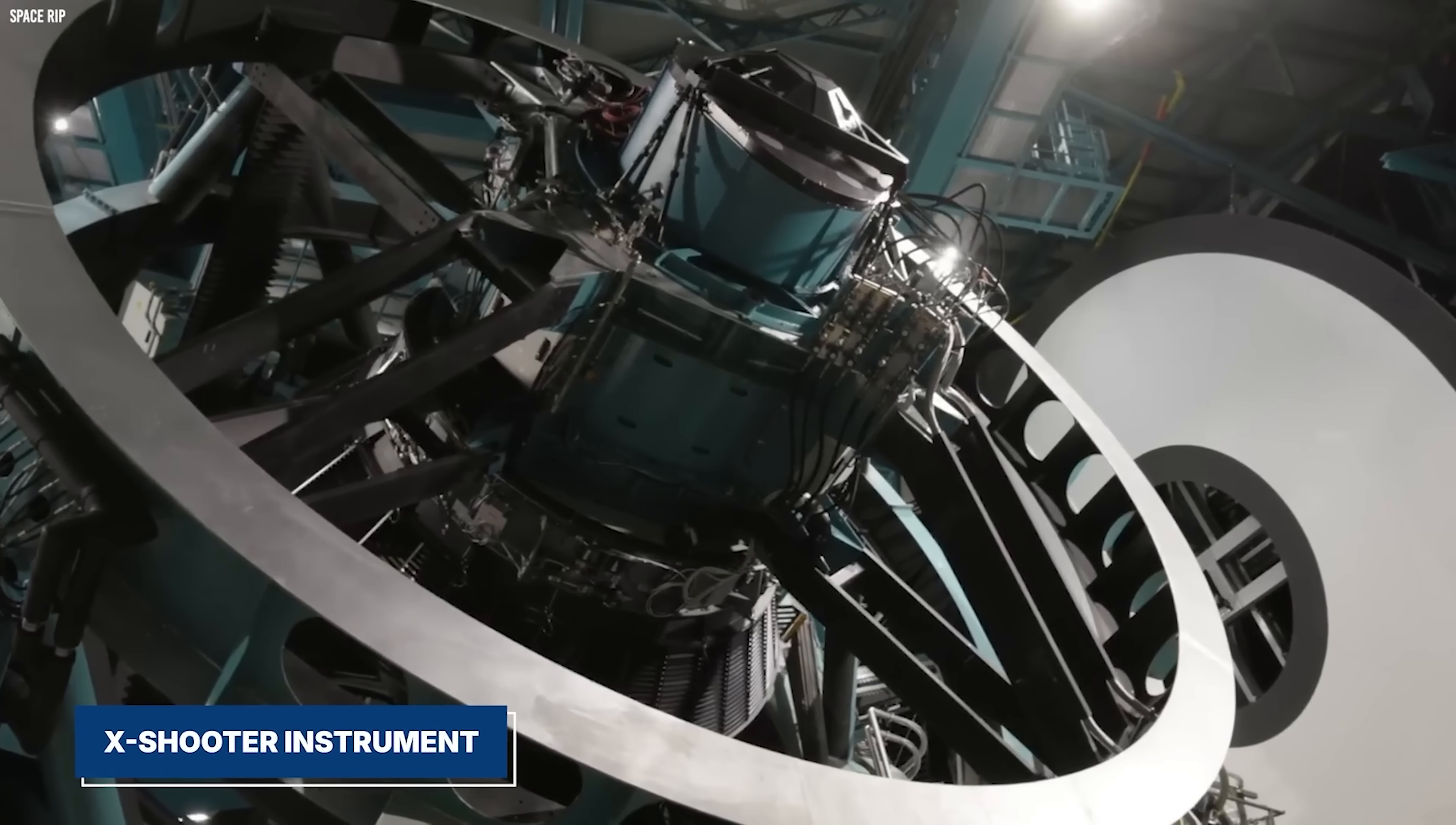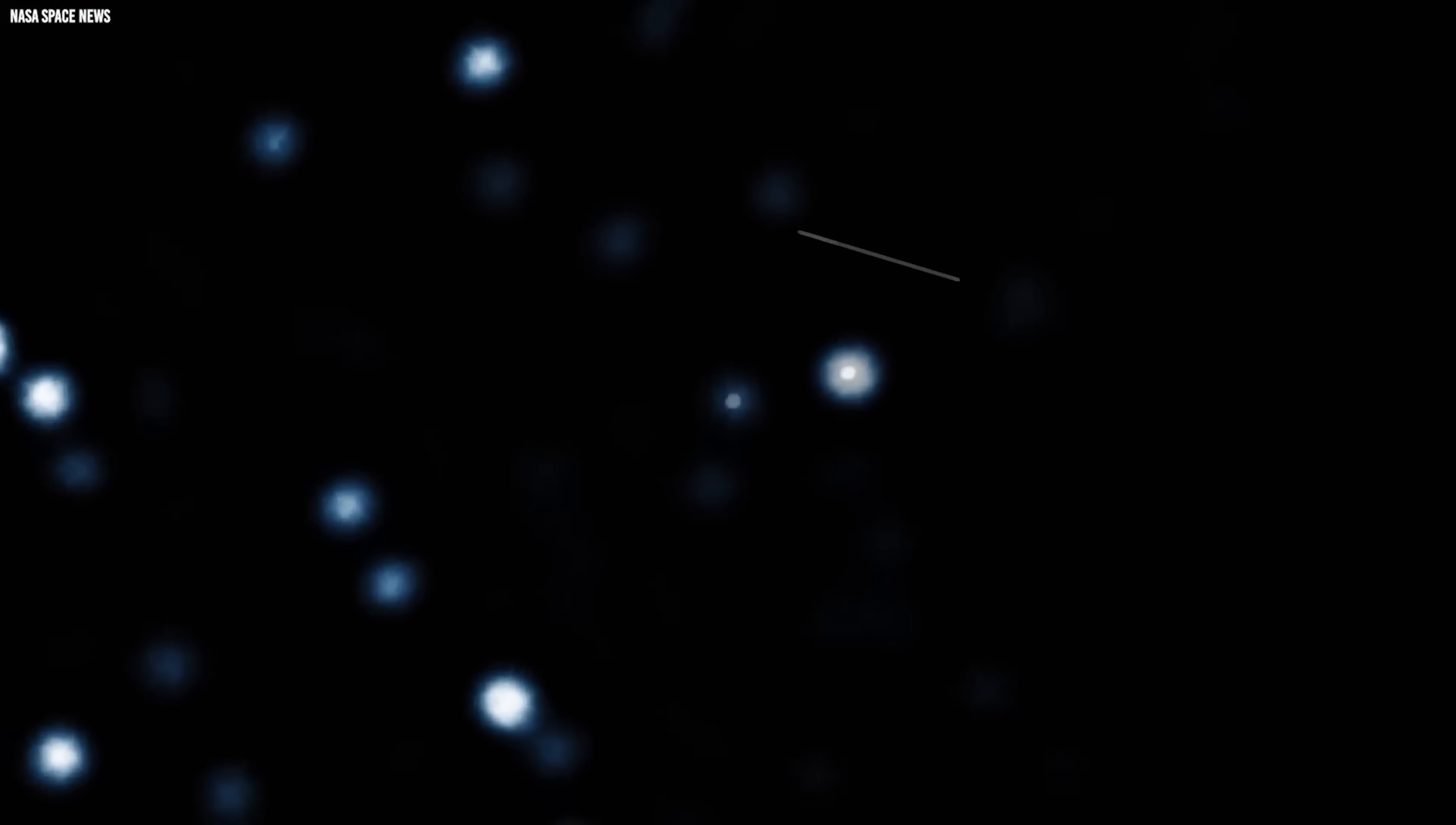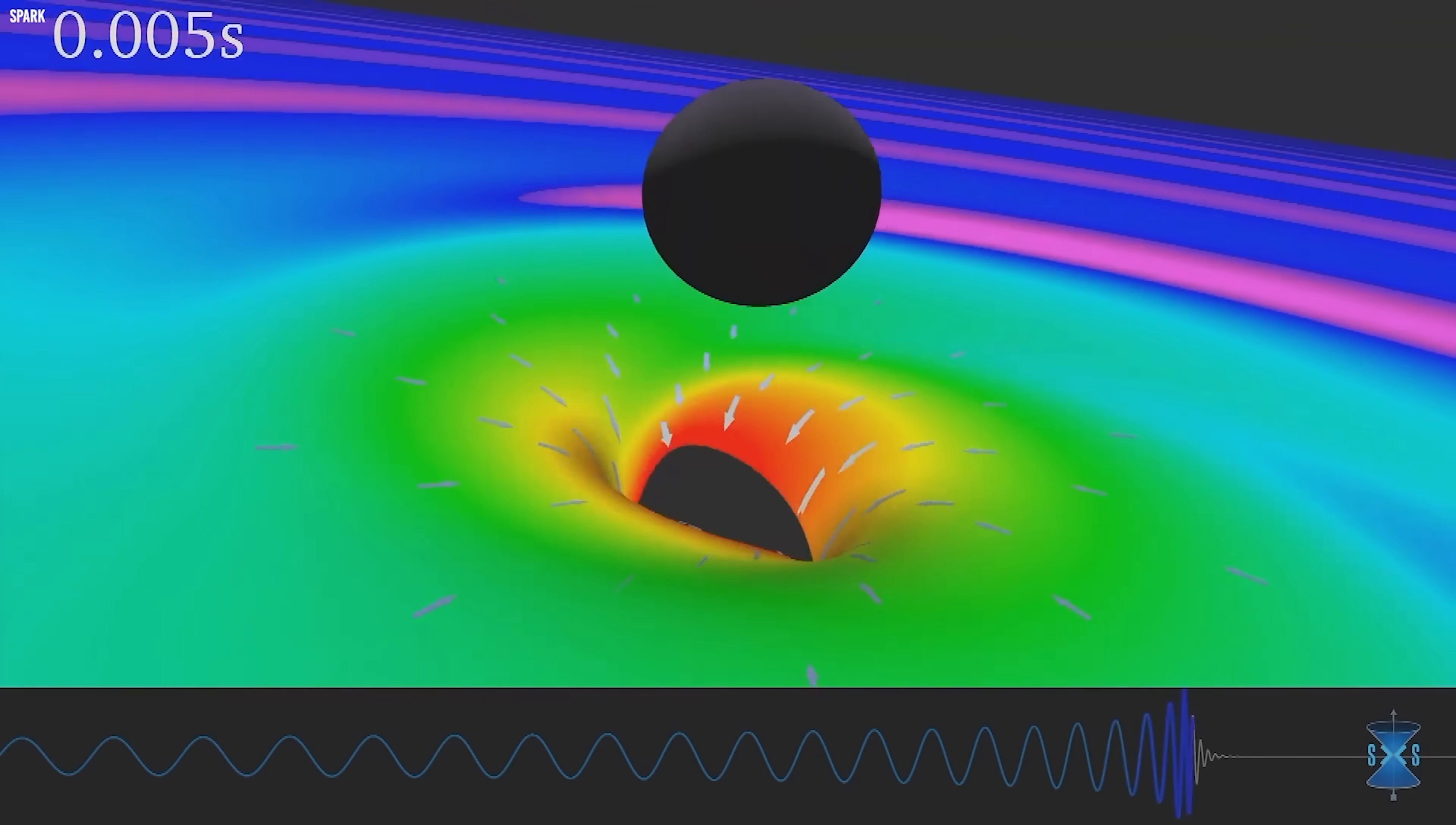Using the X-Shooter instrument on the Very Large Telescope, researchers tracked V. Sagittae continuously for four months. For the first time, they captured a near-complete view of the system across multiple wavelengths, allowing them to isolate physical processes that had previously been obscured by its wild brightness swings.